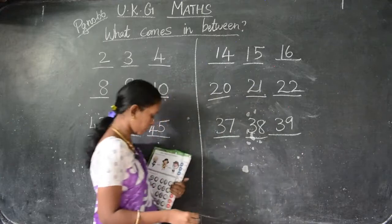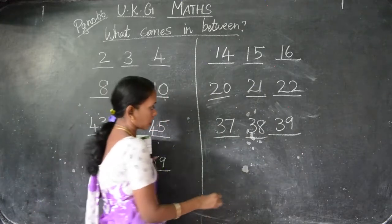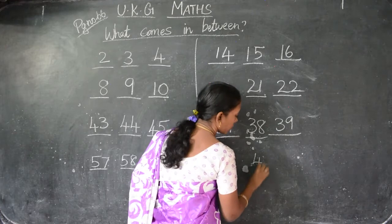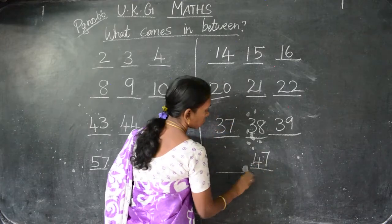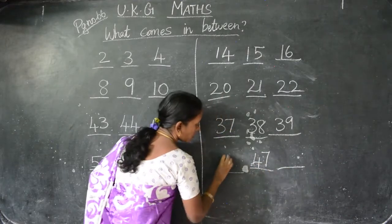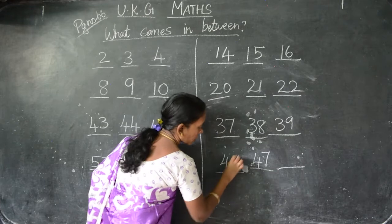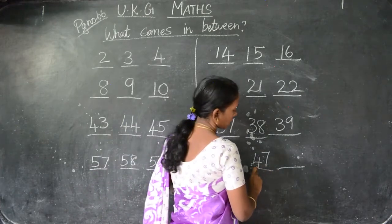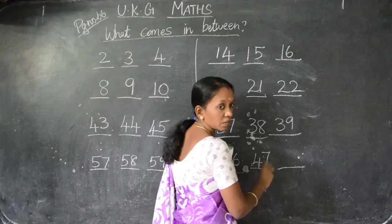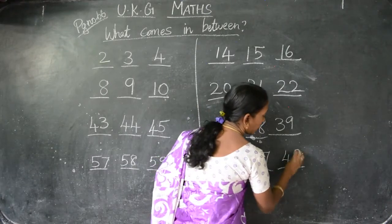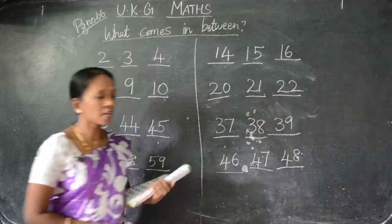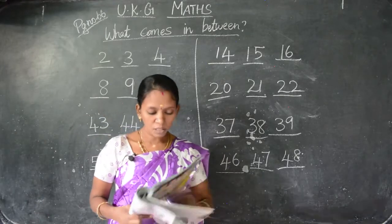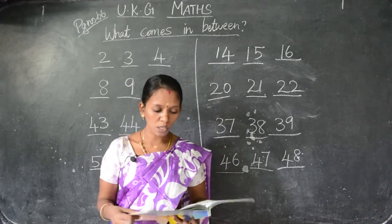Like that you have to write. Last one, what is there? 47. What will come before? Before 47 is 46. After 47 is 48. Like that you have to write. After this one we are going to the next page.